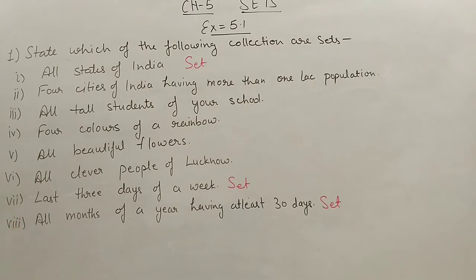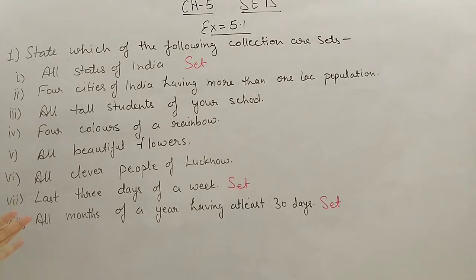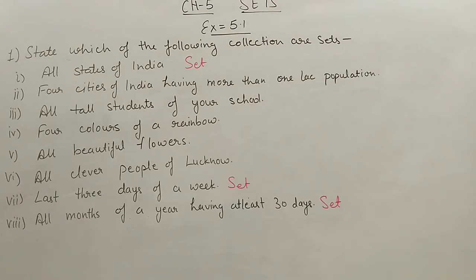Next: last three days of a week. This is well defined — they have mentioned 'last three days', so the definition is proper and it will come under a set. Next: all months of a year having at least 30 days. We know how many days each month has, and we can find out which months have at least 30 days. So this is also a well defined set.